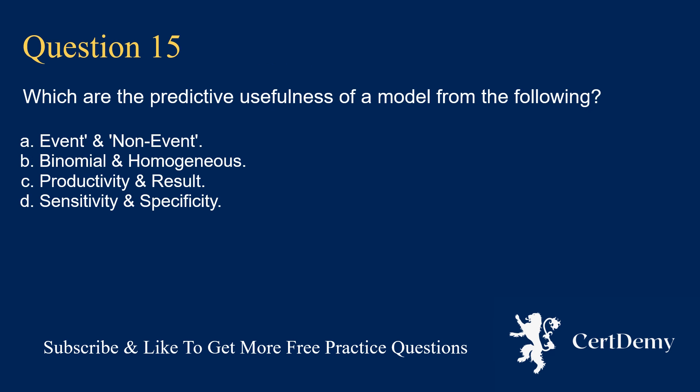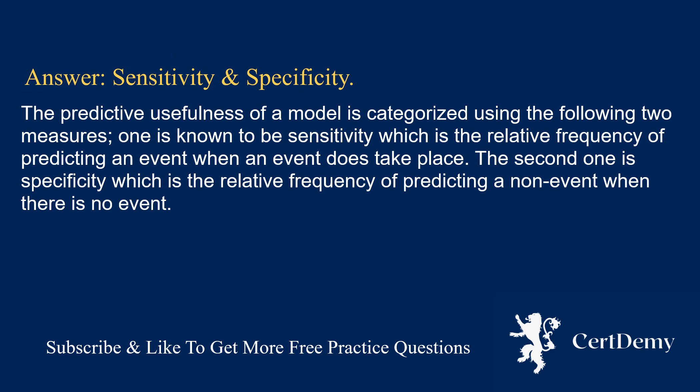Question 15. Which are the predictive usefulness measures of a model? Options: event and non-event; binomial and homogeneous; productivity and result; sensitivity and specificity. The answer is: sensitivity and specificity. The predictive usefulness of a model is categorized using two measures: sensitivity, the relative frequency of predicting an event when an event does take place, and specificity, the relative frequency of predicting a non-event when there is no event.